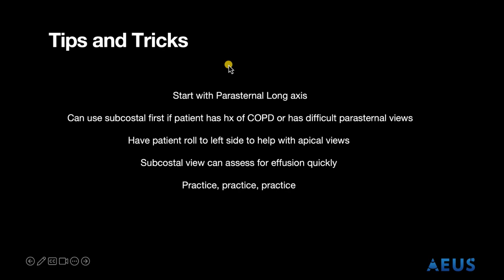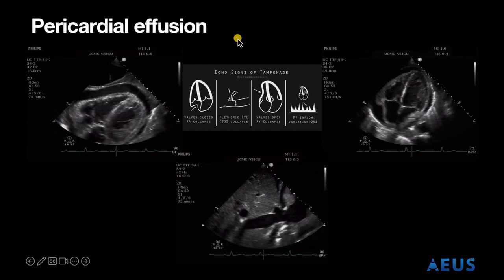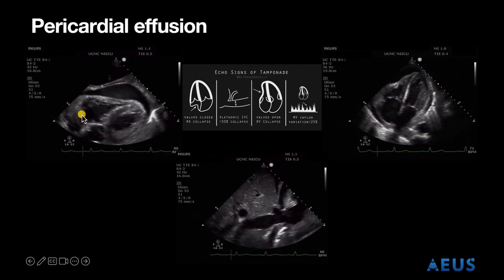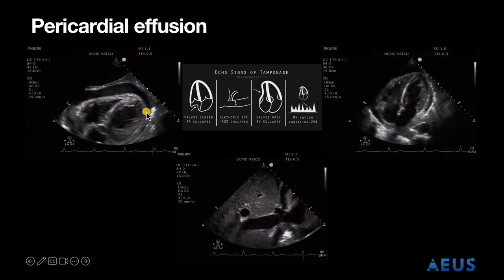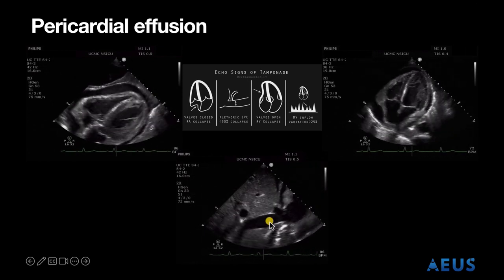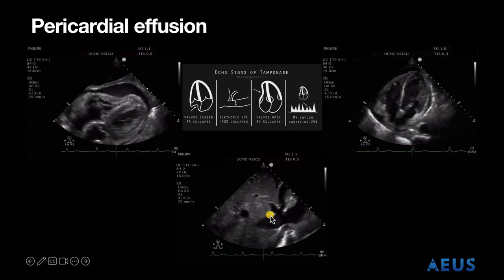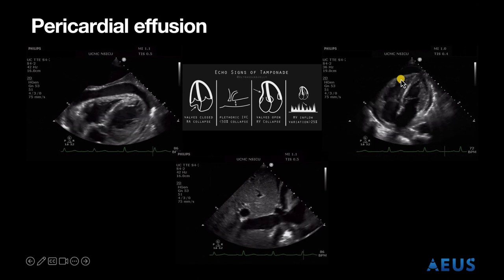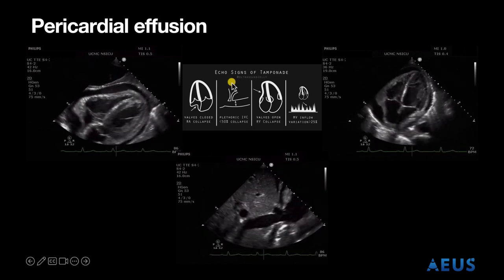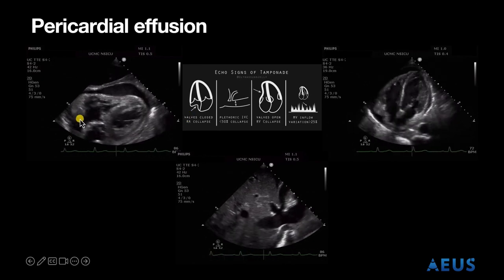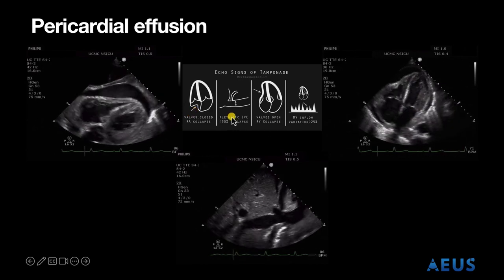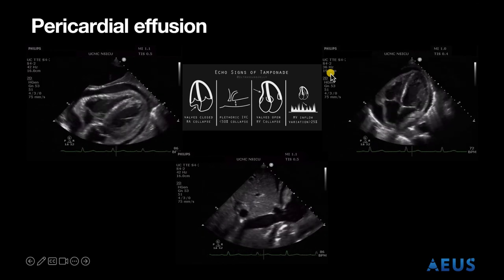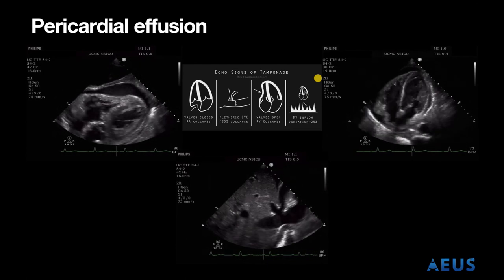Now we will discuss some pathological echoes. This is an example of a large pericardial effusion leading to tamponade. We have a subcostal view using the liver as a window, and we can see a large circumferential effusion around the heart. We also see a plethoric IVC with minimal or less than 50% collapse during respiration. Here we have an apical four chamber view showing signs of right ventricular diastolic collapse. Signs of tamponade on echo include right atrial collapse, a plethoric IVC, right ventricular wall diastolic collapse when the valve is open, and mitral inflow variations — inflow variations greater than 25% can also indicate tamponade.